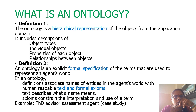So morphology has two definitions. The first definition says that it is a hierarchical representation of all objects. These objects belong to a particular computation domain and they will include object types, individual objects, properties of a particular object, or it could be a relationship with any object.